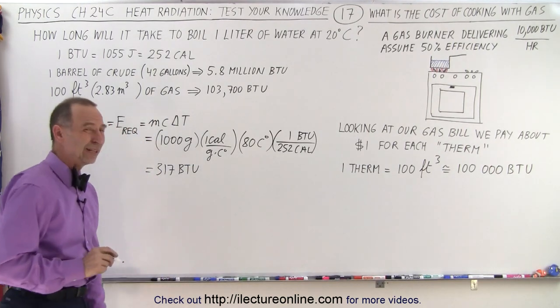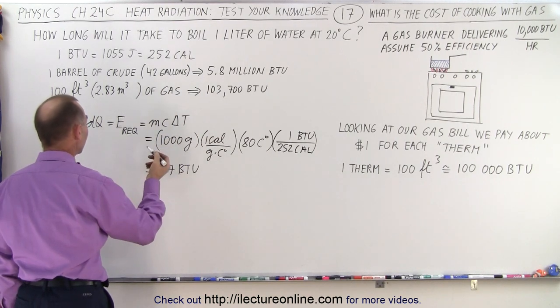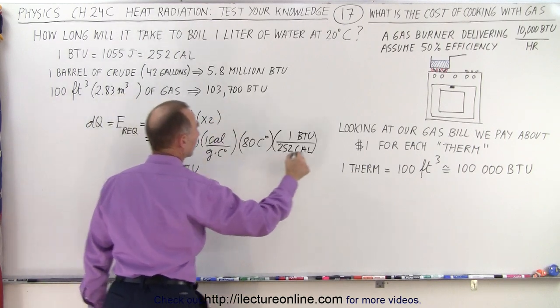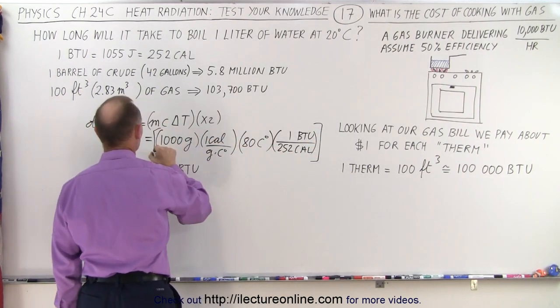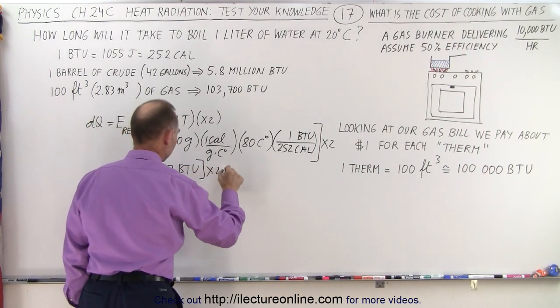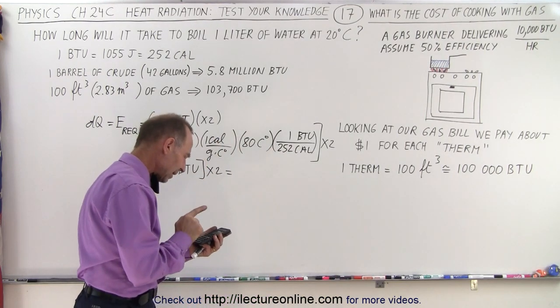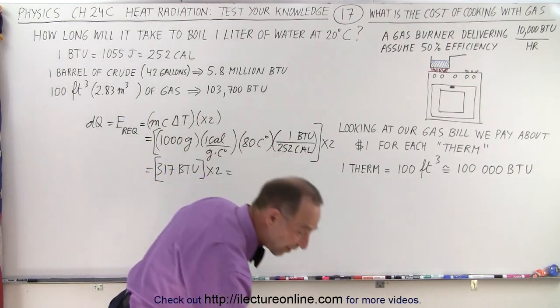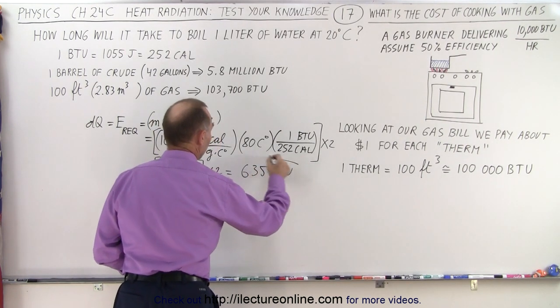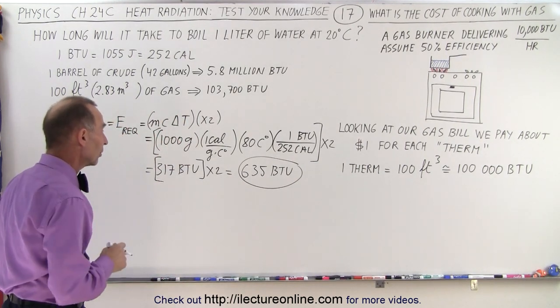That's equal to 317 BTUs. And of course, we need twice as much because we're not 100% efficient. So in essence, we need to multiply that times 2 because of the lack of efficiency. That multiplied times 2, we get 635 BTUs. That's the energy required to take one liter of water from 20 degrees Celsius all the way to 100 degrees Celsius.